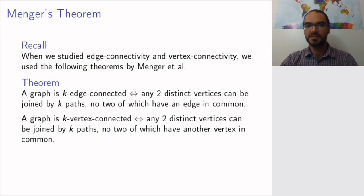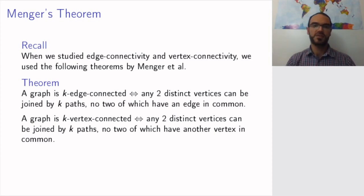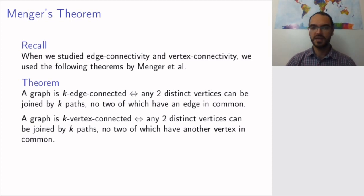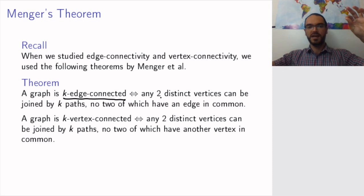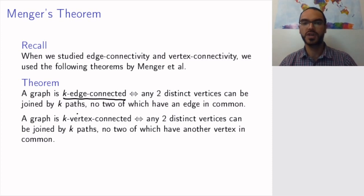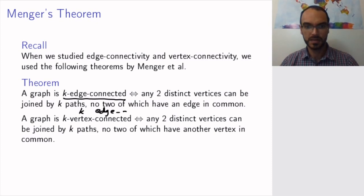Let us now move on to a topic that is seemingly different, but we will see that it is in fact related to matchings. Remember from a long time ago, we looked at Menger's theorem. This was when we studied edge connectivity and vertex connectivity. A graph is k edge connected — meaning the removal of less than k edges will not disconnect the graph — if and only if any two distinct vertices can be joined by k edge disjoint paths.